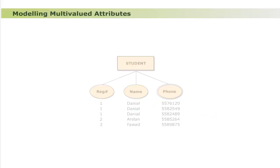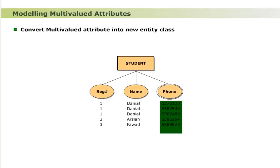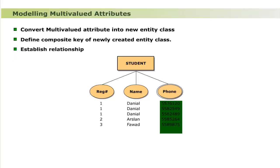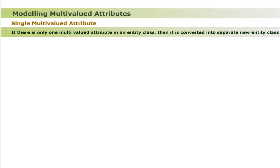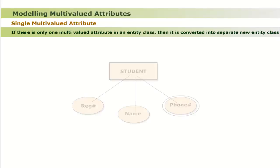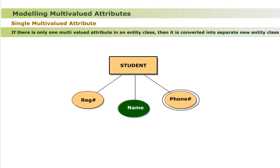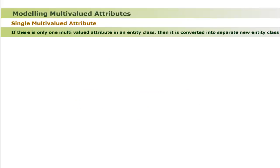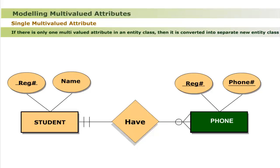These problems can be resolved by: converting the multi-valued attribute into a new entity class; the newly created entity class has a composite key with the primary key attribute of the original entity class; and establishing a relationship between the original entity class and the newly created entity class. For a single multi-valued attribute, if there is only one multi-valued attribute in an entity class, it is converted into a separate new entity class. For example, the entity class Student with registration number, name, and multi-valued attribute 'phone' — the multi-valued attribute 'phone number' is converted into a new entity class 'phone'.